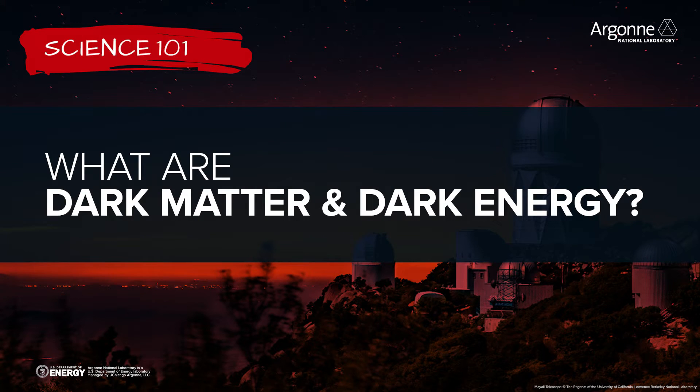We know that dark matter and dark energy exist even though we cannot directly see them because of the forces that they exert on other objects. In the case of dark matter, we can see when we observe the movement of objects in the sky and the structure of all of the matter in the universe — the matter that we are able to detect, the matter that we understand — cannot possibly account for all of the gravity that we see. So that's why we postulate that there is some form of dark matter that we cannot see and that is creating this gravity.